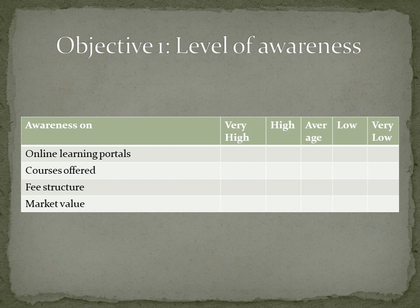The four statements to measure the level of awareness are: awareness on online learning patterns, awareness on courses offered online, awareness on fee structure of online courses, and awareness on market demand for online courses. By consolidating all these four aspects, I will be able to find an overall awareness score for a respondent.